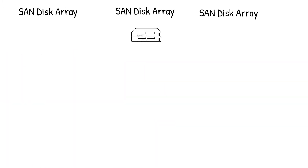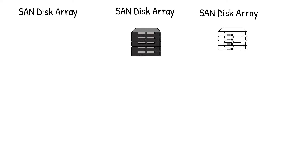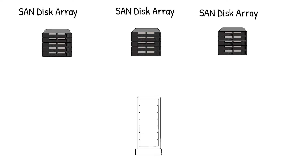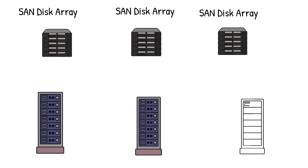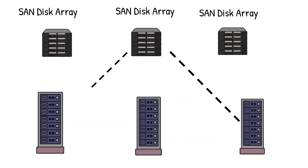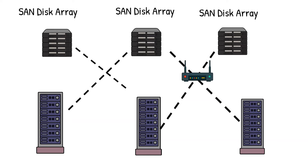SAN, or storage area network, is a dedicated network — literally a separate network devoted entirely to storage. SAN is used for data storage and consists of multiple disk arrays, switches, and servers. It is interconnected with fiber channel and connected to the outside world through a fiber channel switch or bridge. It is a special high-speed network that stores and provides access to large amounts of data, accessing it as if it were a local hard drive.